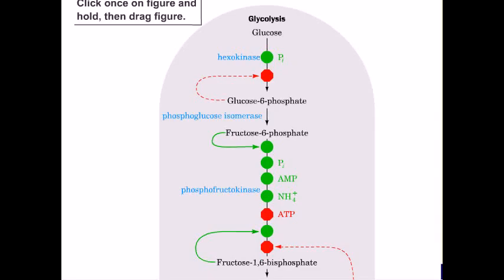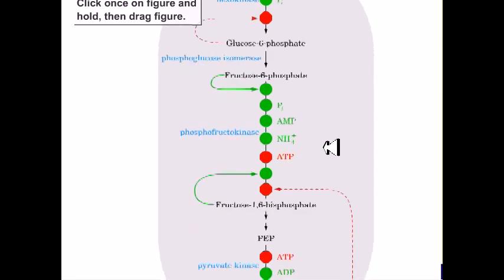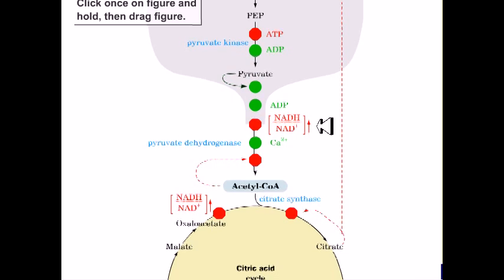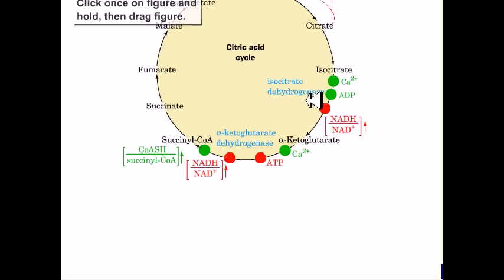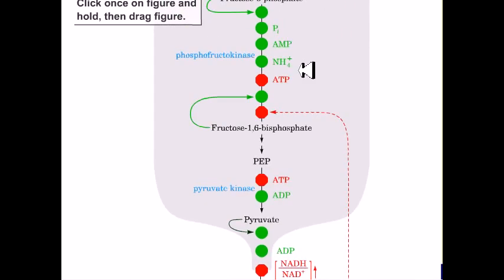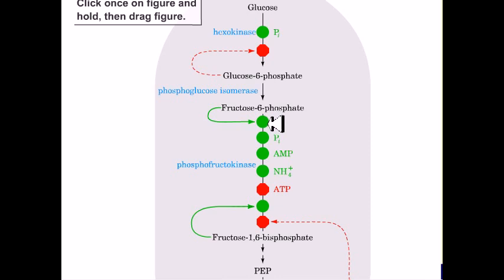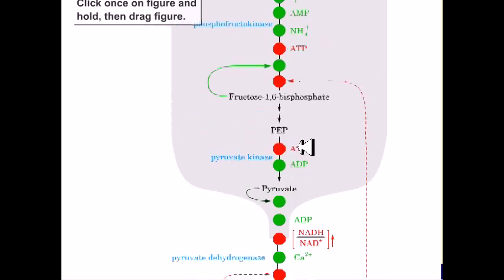Hello friends, in this video we'll be talking about the coordinated control of glycolysis and citric acid cycle. We can see a large picture in front of your eyes now with many steps. What we are looking at: the green colored spots denote the positive regulatory sites and the red colored spots suggest negative regulatory sites of glycolysis and Krebs cycle.